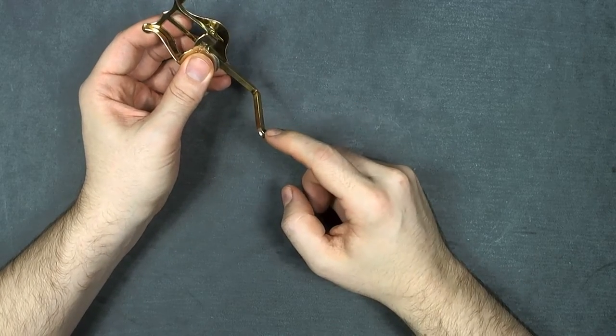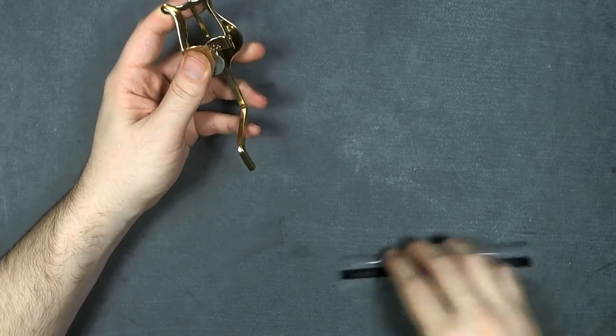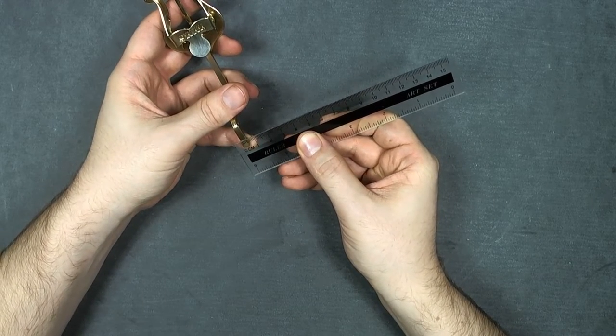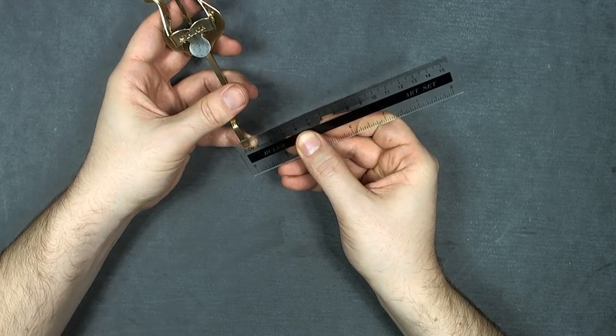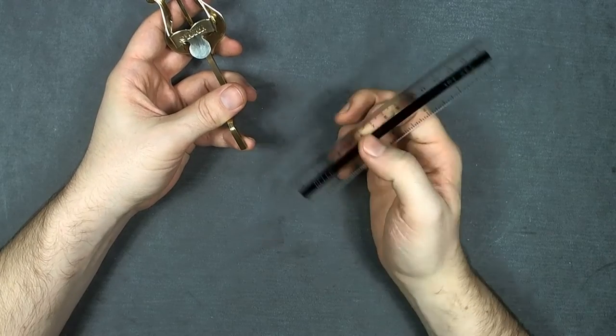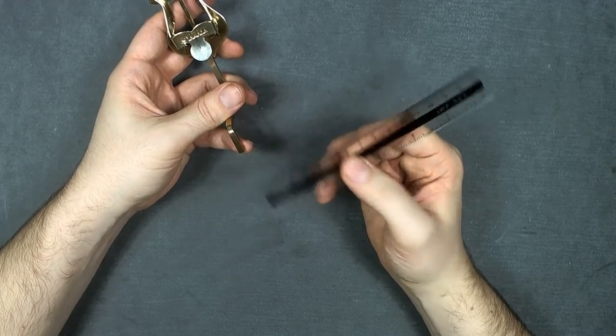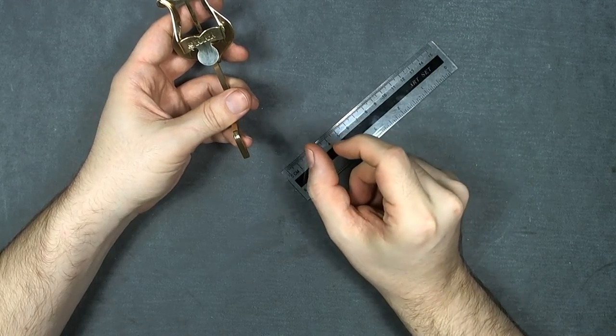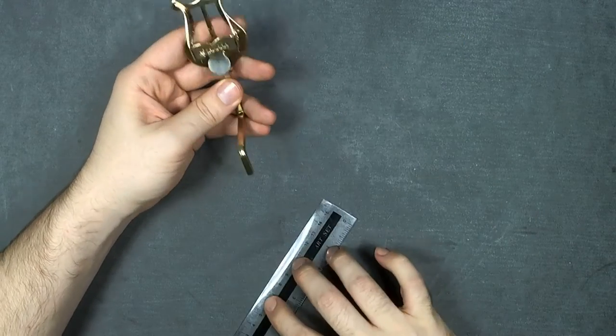The biggest thing here is the post, which is 3/16ths of an inch. If you don't know what that is, I guess it's about half a centimeter, so 5 millimeters. Make sure that you measure the post hole in your instrument because Yamaha uses an extra large post, so their lyre is a little bigger than most, so this may not fit.